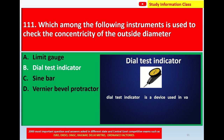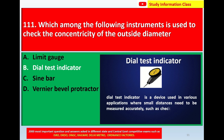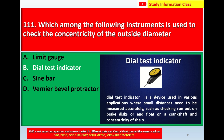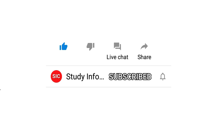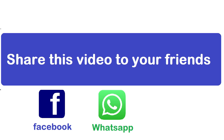The dial test indicator is a device used in various applications where small distances need to be measured accurately, such as checking runout on black discs, flatness on a crankshaft, and concentricity of the outside diameter. So for question number 111, which among the following instruments is used to check the concentricity of the outside diameter, the correct answer is Option B, dial test indicator.